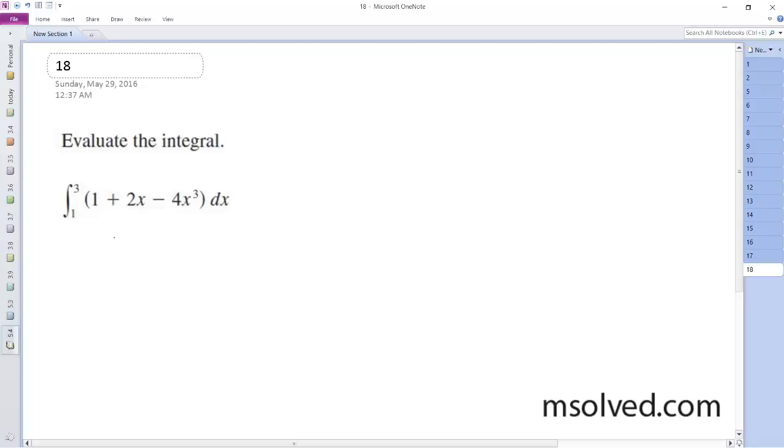I want to evaluate this integral. First, find the antiderivative. That's going to be x, plus 2x squared divided by 2, which is just x squared,